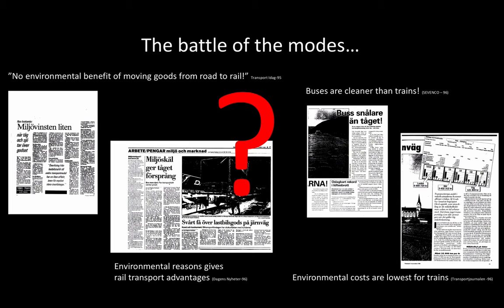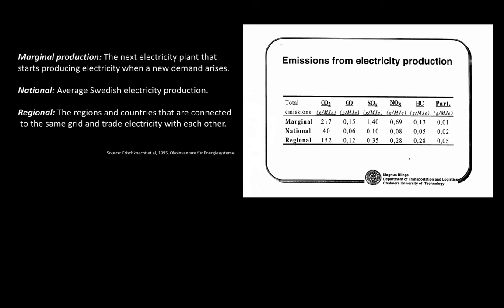When we looked into those reports, we found a big difference in how electricity production running the trains was calculated. You could use different arguments and different production methodologies. One is the marginal production approach — electricity is produced basically in the same moment as it is consumed, so the next time you use electricity in the system, a production plant increases its output. In this methodology, the claim is that the fastest way to produce electricity at the margin is by using fossil coal-fired or oil-fired electricity plants.